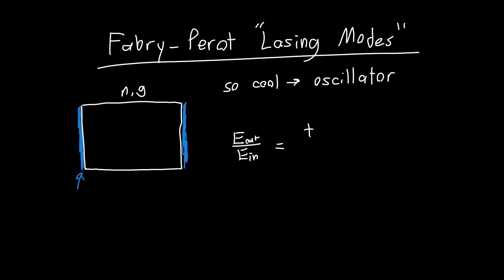We just said that was equal to these terms t01, t10 times e to the gain times length over 2. And where this gain is defined in terms of the intensity, so I as a function of z, if this is the z direction, is equal to I0 times e to the gz.